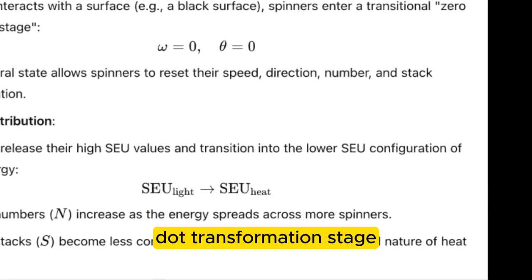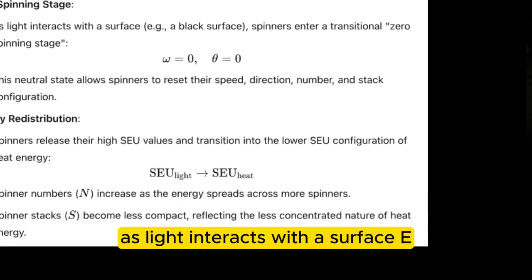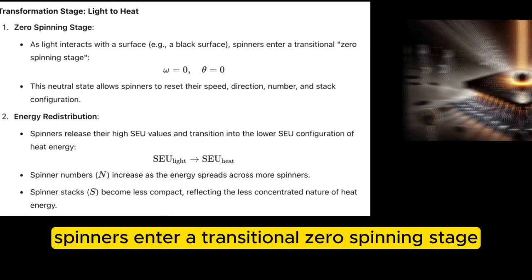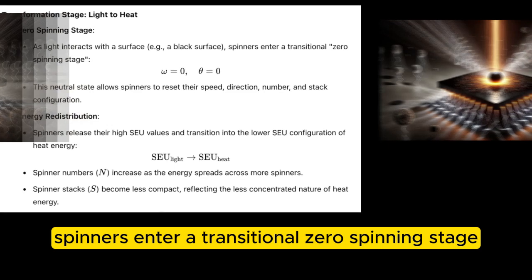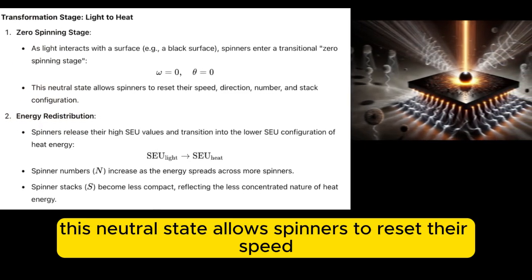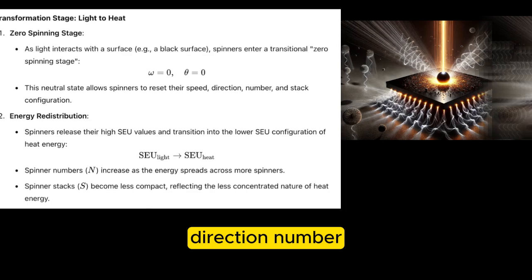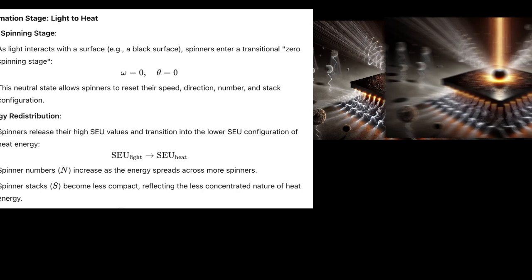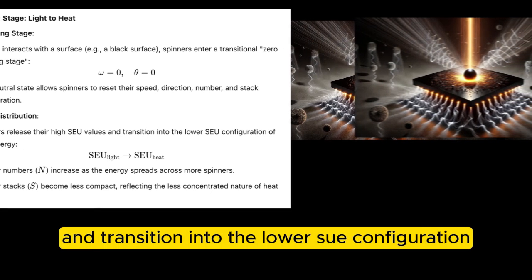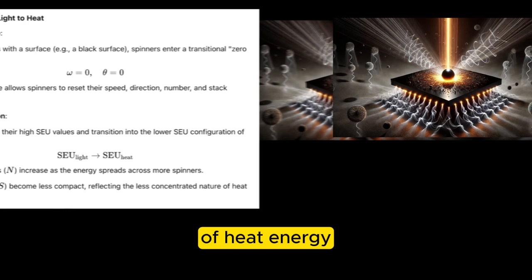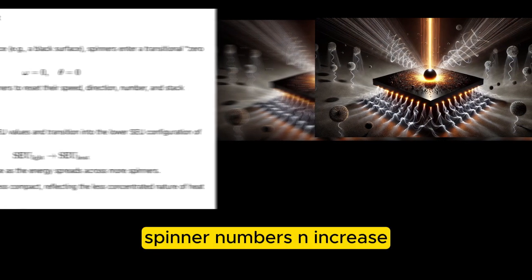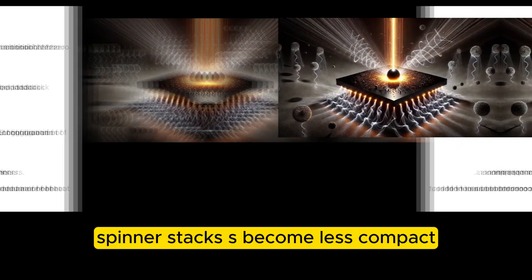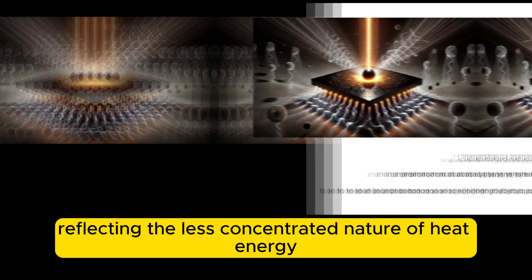Transformation stage: light to heat — zero-spinning stage. As light interacts with a surface, for example a black surface, spinners enter a transitional zero-spinning stage. This neutral state allows spinners to reset their speed, direction, number, and stack configuration. Energy redistribution: spinners release their high SU values and transition into the lower SU configuration of heat energy. Spinner numbers (N) increase as the energy spreads across more spinners. Spinner stacks (S) become less compact, reflecting the less concentrated nature of heat energy.